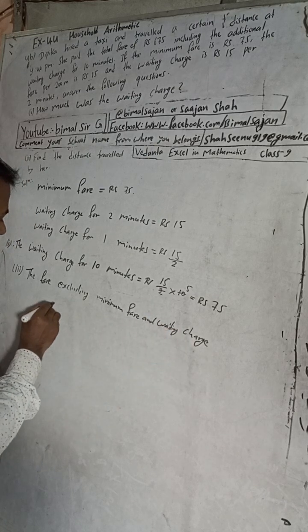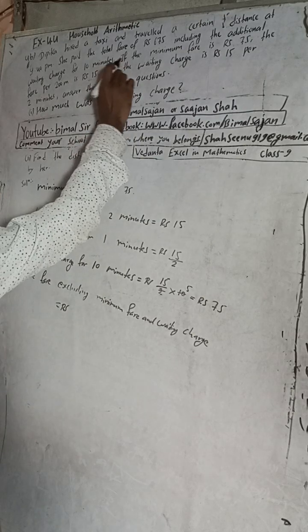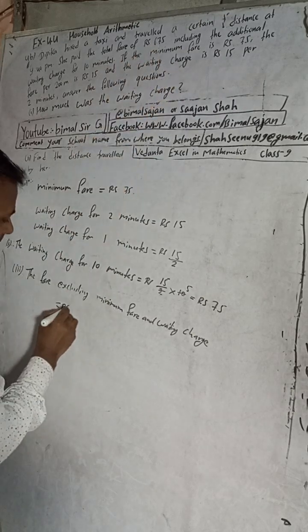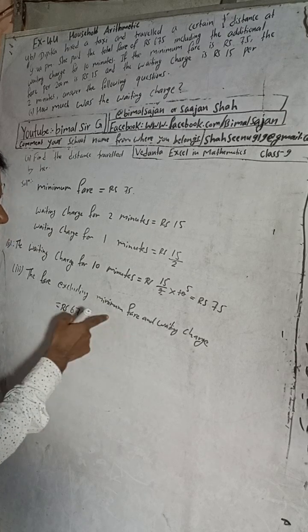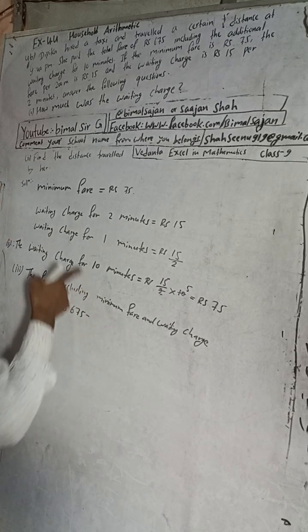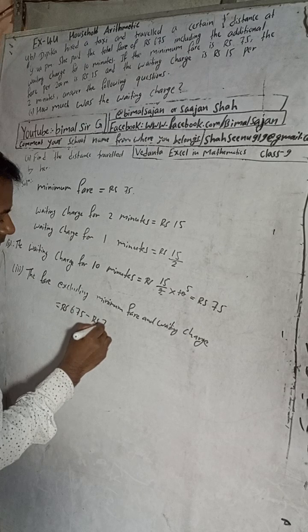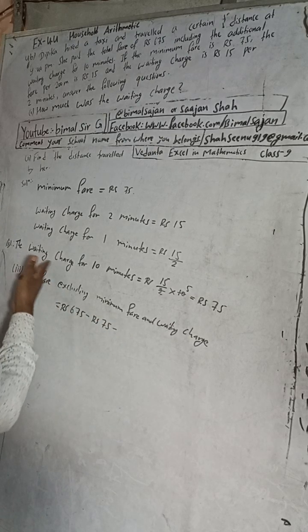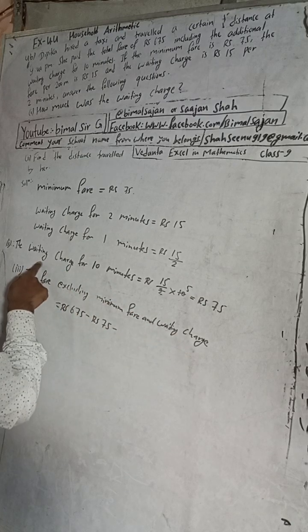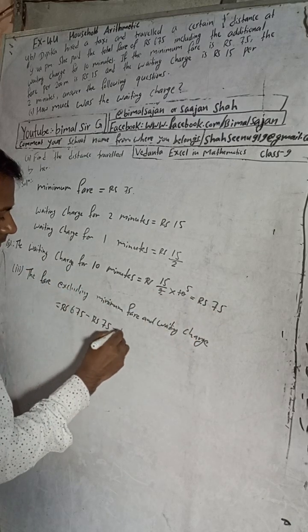Total fare = Rs 675. Minus minimum fare = Rs 75. Minus waiting charge for 10 minutes = Rs 75. So the fare excluding minimum charge and waiting charge = 675 − 75 − 75 = Rs 525.